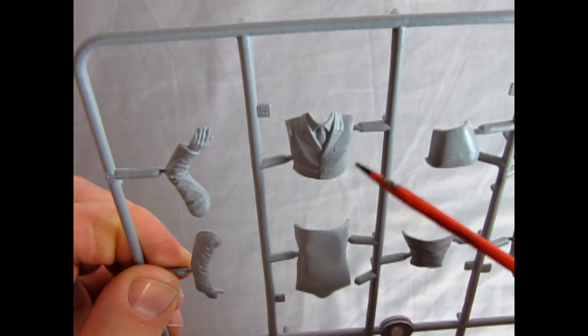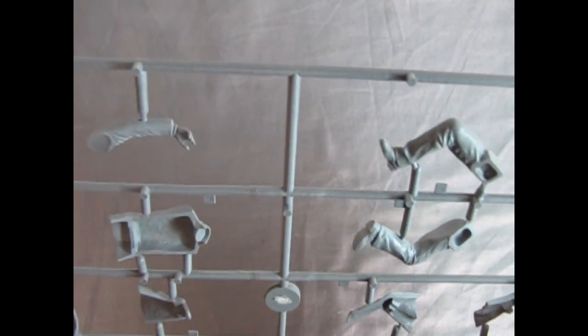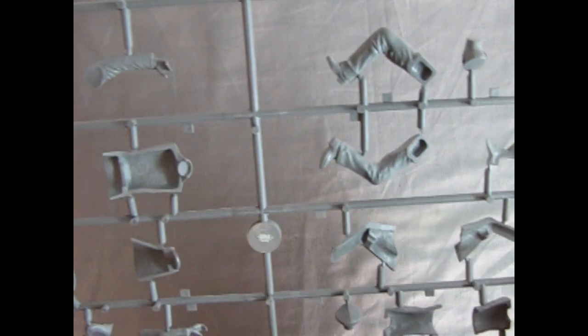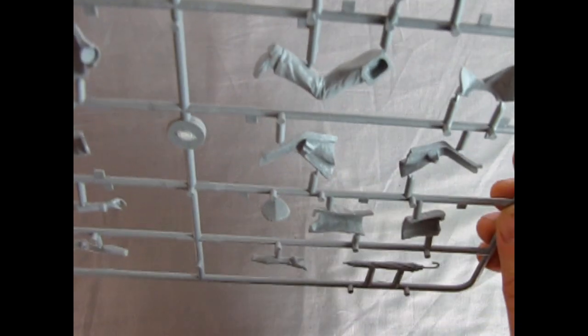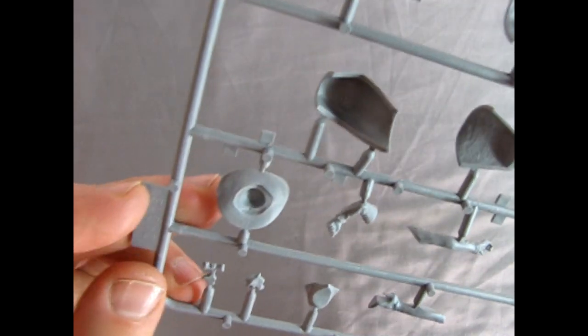Look at the nice suit jacket with the pocket, the tie and the buttons. Really excellent kit. Turning it over you can see the nice detail along the back. No mold marks but nice to see that the detail for the legs goes all the way around including the wrinkles in the pants.